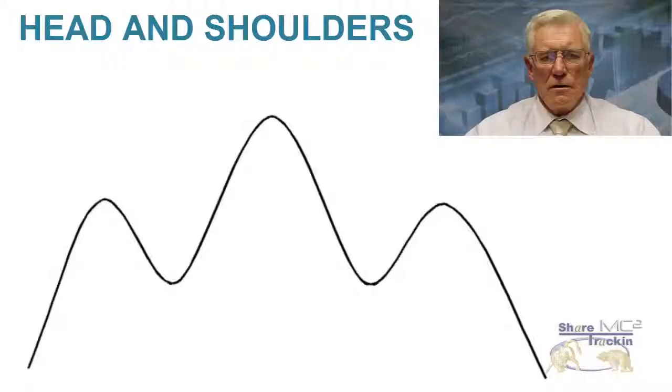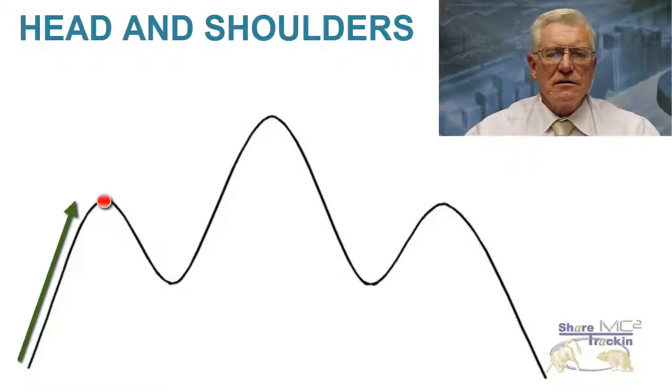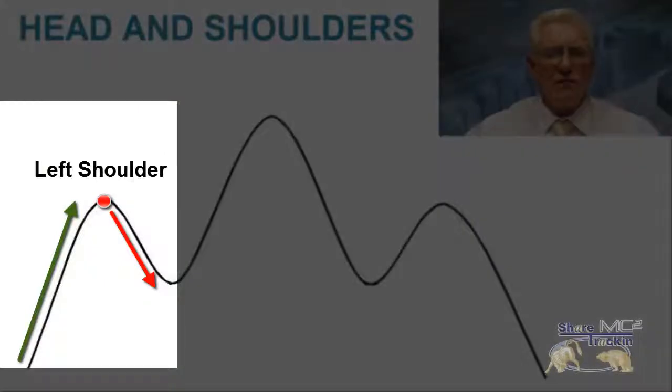Now the first formation I want to look at is a head and shoulders formation. You can see here that after a strong upward run the share price rises to a point and then falls back creating the left shoulder of the formation. This happens because many of the smart investors decide to sell out while there is still strong demand for their shares.